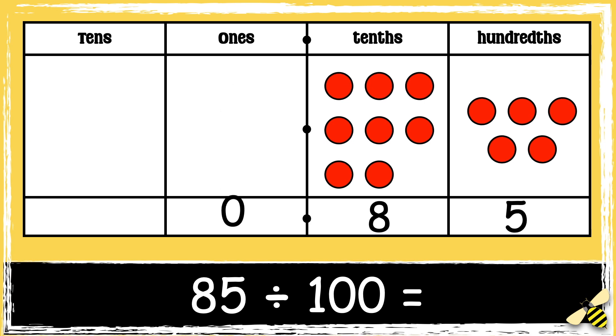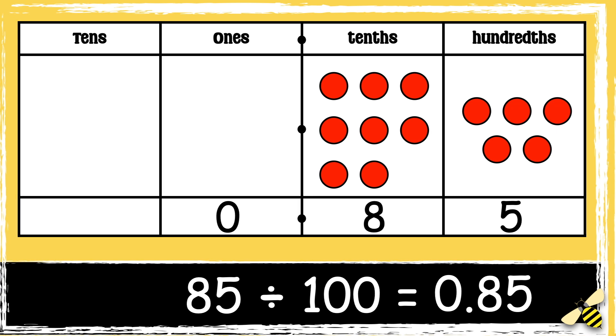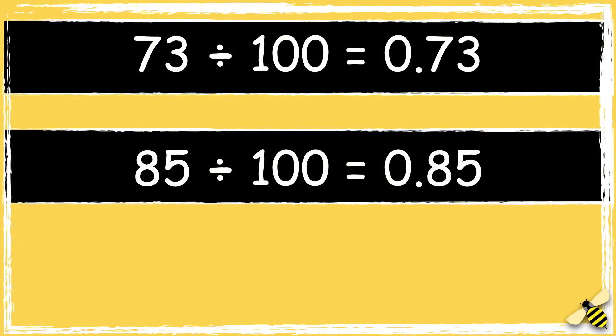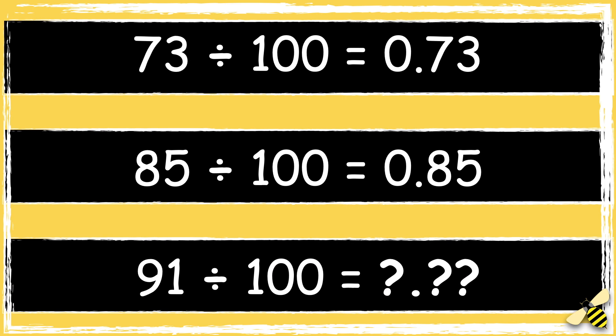So the answer is 0.85. Now it's your turn — what is 91 divided by 100? Let me know your answer in the comment section.